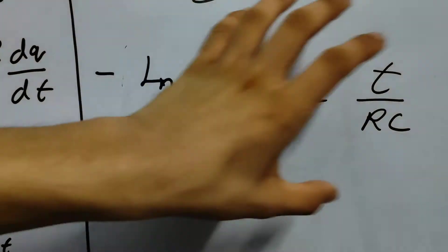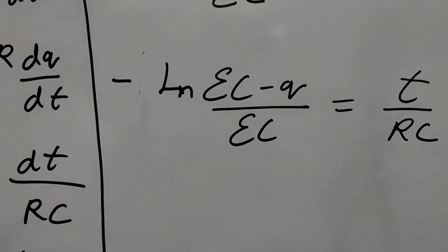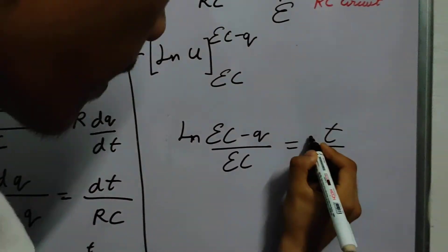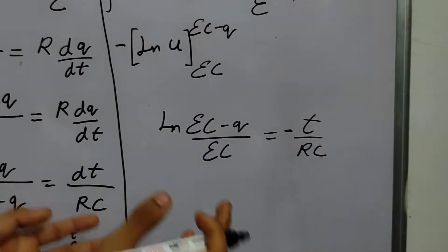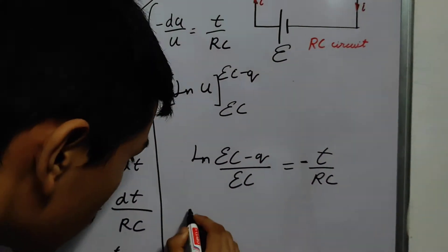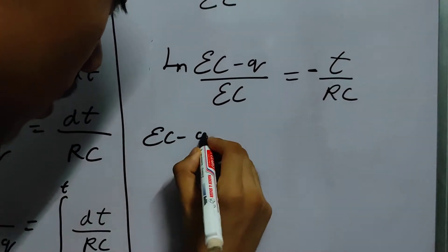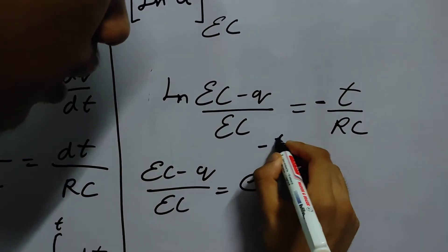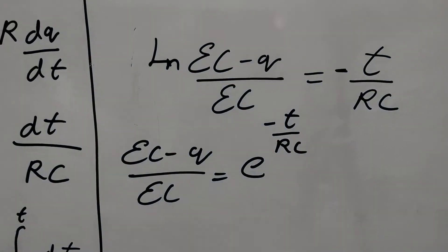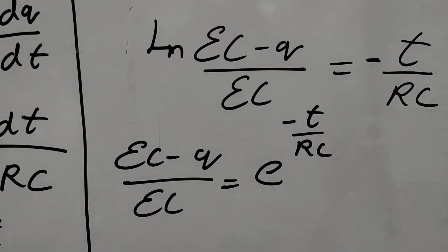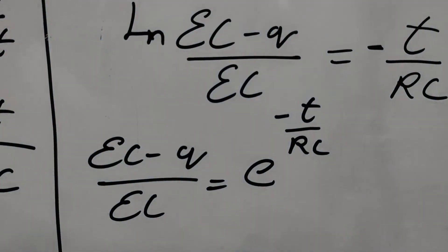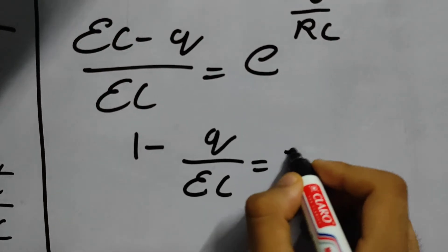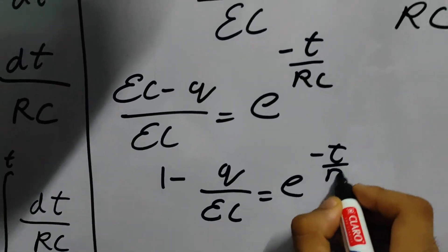Now this is in its logarithmic form. We can convert it into exponential form. How do we do this? We raise, first we transport the minus sign. Then we raise the entire thing to the power E. How will this look? EC minus Q upon EC E to the power minus T by RC.